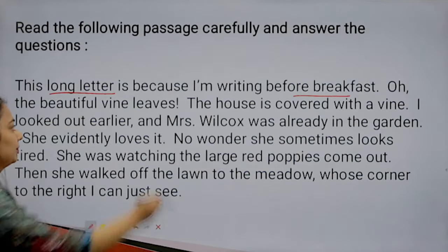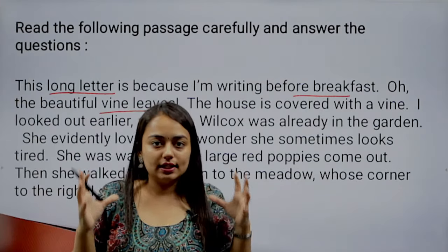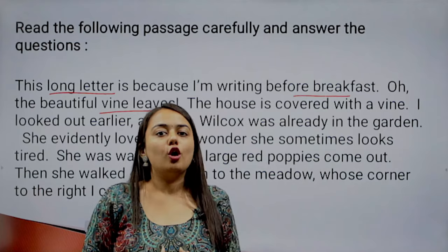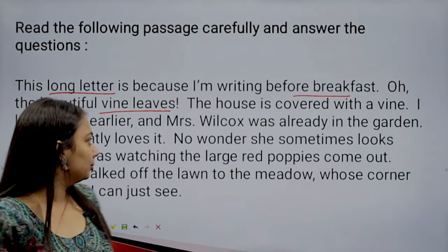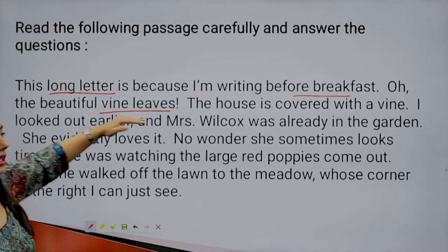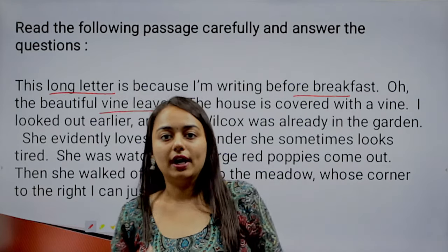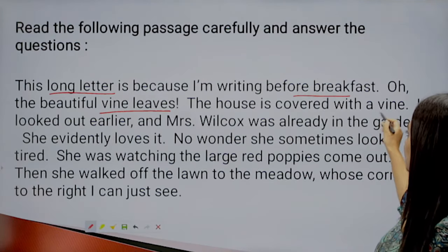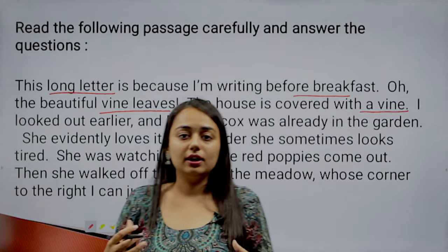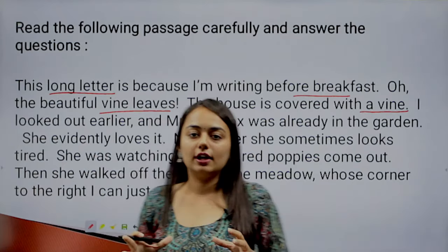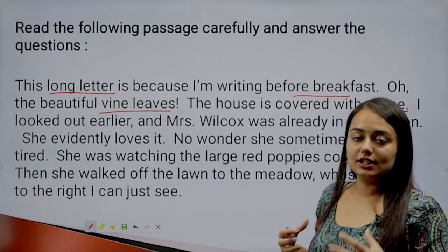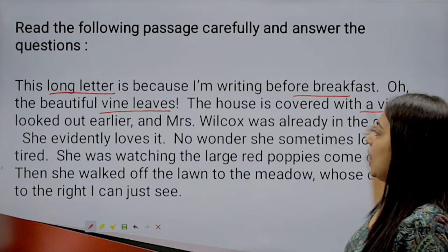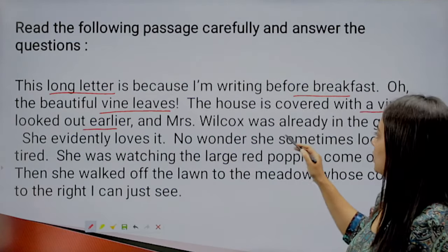'Oh the beautiful wine leaves.' She is writing down her observations, sitting in a garden or outside the home, noticing the scenery of an early morning. She describes seeing wine leaves — vines are growing there — and she notices the beautiful leaves. 'The house is covered with a vine.' She vividly describes what she sees, and while reading it, you literally imagine it.